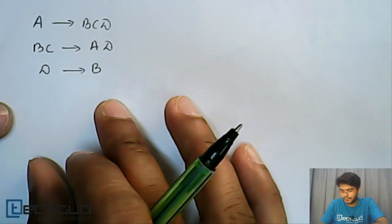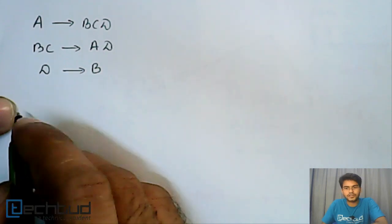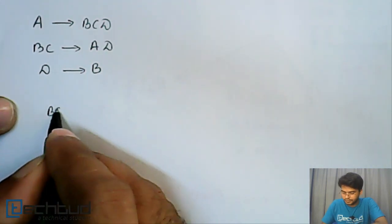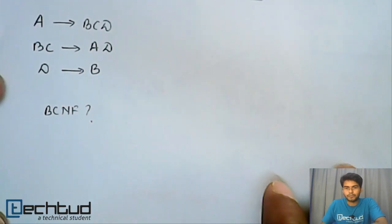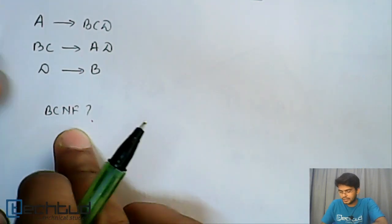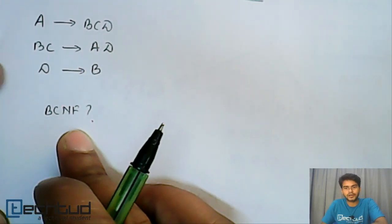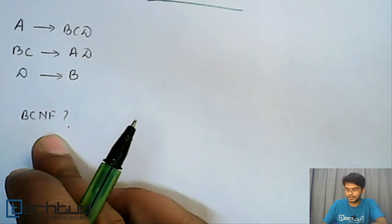Here in this example we have given set of functional dependencies and we have to determine whether the relationship is in BCNF. So before we go and find out whether it is BCNF or not, we have to understand what is the condition for BCNF.